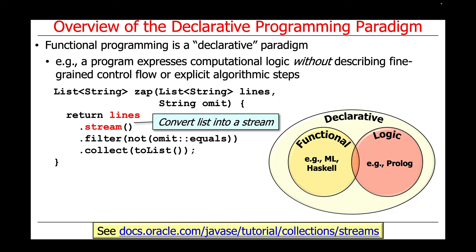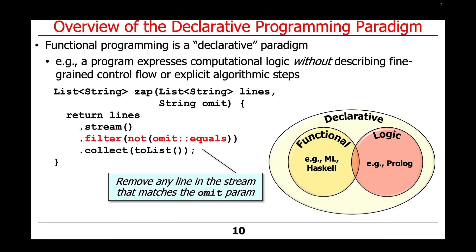The first thing it does is take the list of strings and convert it into something called a stream. A stream is basically a flow of elements, values, data, or objects that can be transformed or filtered by subsequent operations. In this particular case, we're going to apply the filter operation to remove any line in the stream that matches the omit parameter. You can read this as: we only allow things through the filter that don't equal omit.